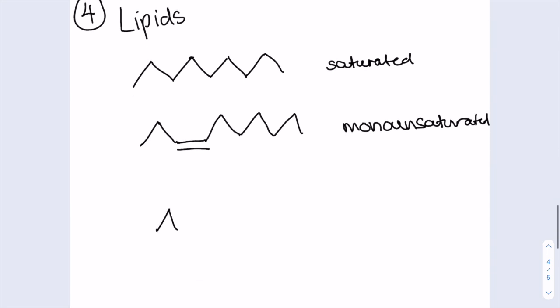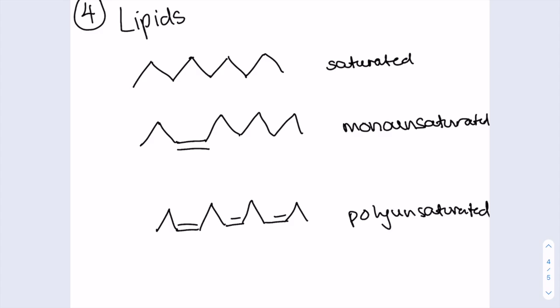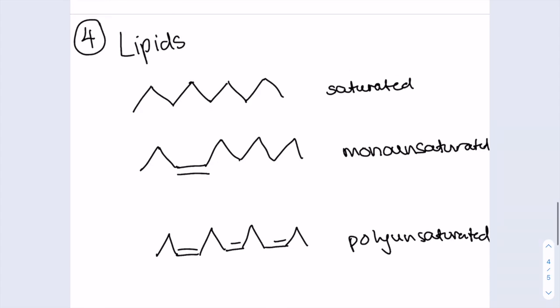So logically, if we draw multiple of these double bonds, then this can be known as a polyunsaturated fatty acid. So this is the more simple way to draw it. This is called actually a skeletal sketch. If you do chemistry, you may know that each one of these bends basically just represents the position of a carbon.